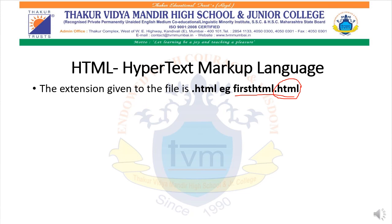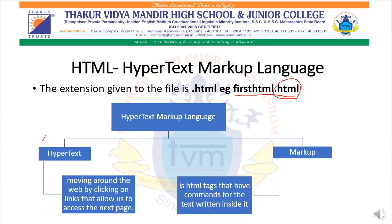HTML is defined in two parts: first, hypertext, and second, markup. Hypertext defines moving around the web page by clicking on links that allow us to access the next page — that is, there are certain tags which act like a link that allow us to move from one web page to another. Markup refers to HTML tags that have commands for the text written inside them. To understand markup, let us understand tags first.